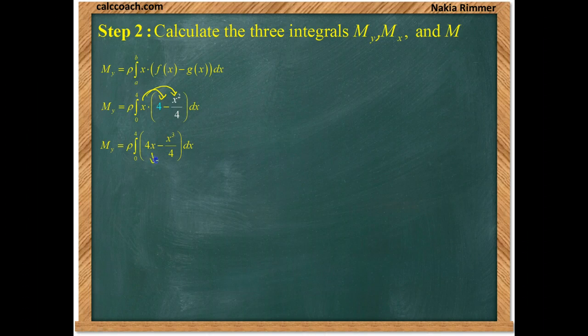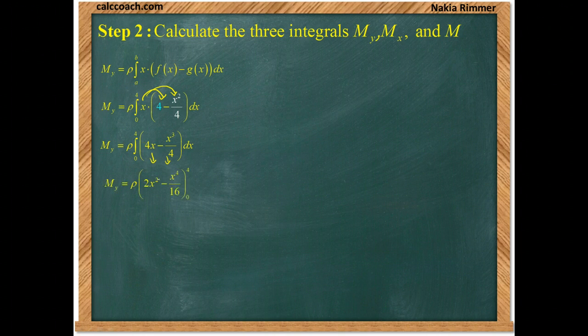So, we just find the anti-derivative of each. Power rule in reverse. We would have 2x squared. And we'd have x to the 4th over 16. Keep the rho on the outside. And we need to evaluate from 0 to 4.